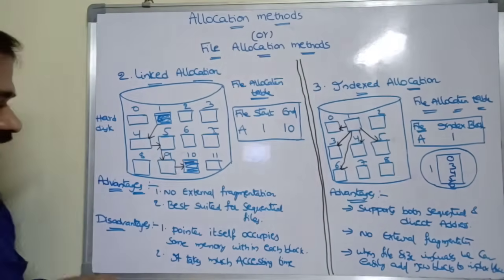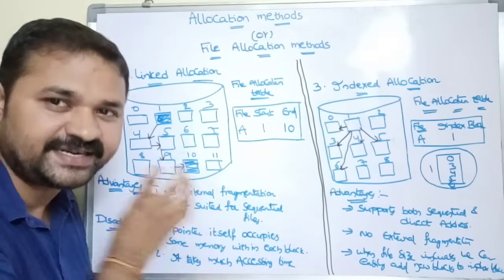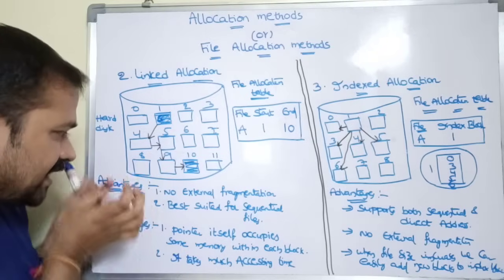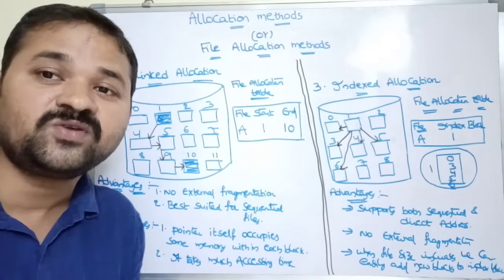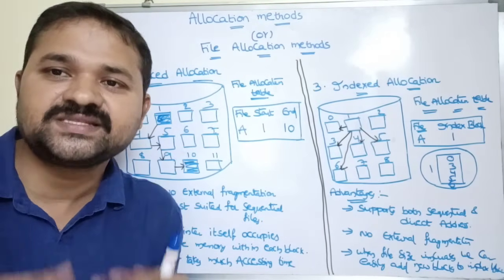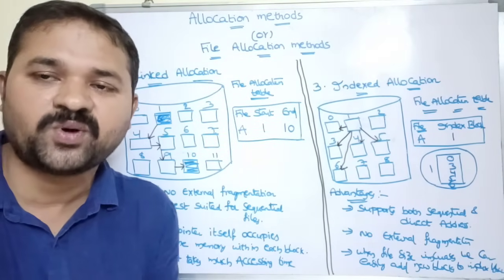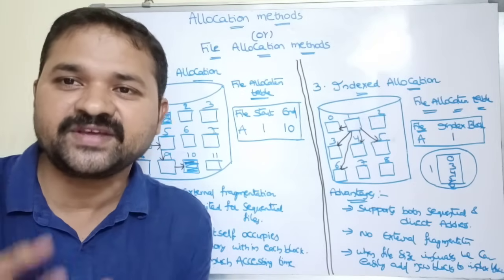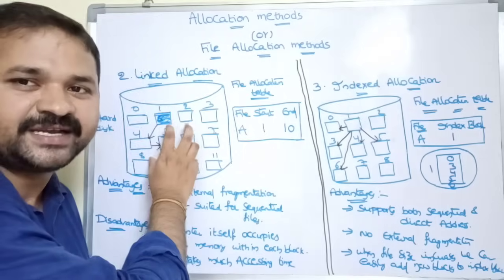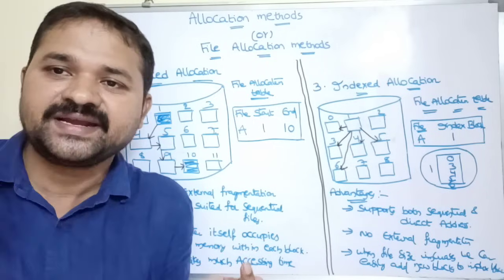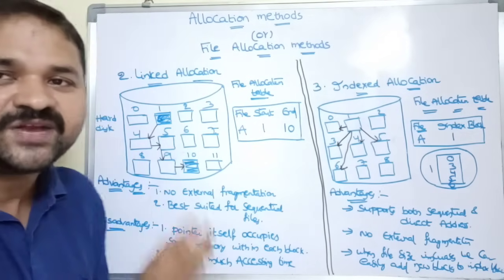The major advantage of linked allocation is that it does not suffer from external fragmentation, unlike contiguous allocation. Whenever there is a free block, we can simply link to it. The second advantage is it is best suitable for sequential file access. The drawbacks are: each block must maintain a pointer, requiring extra memory. Also, traversal takes more time — to access the 100th block, we must traverse all 99 previous blocks. These problems are overcome by the third approach: indexed allocation.